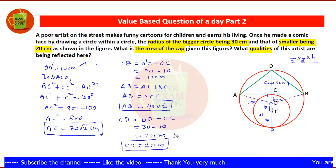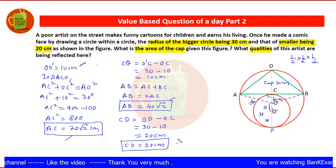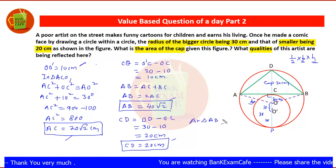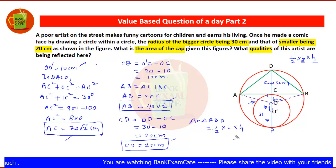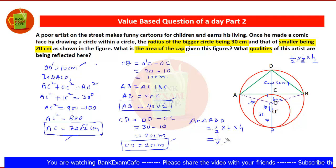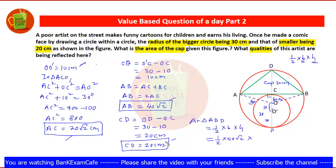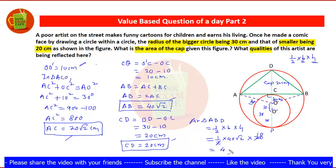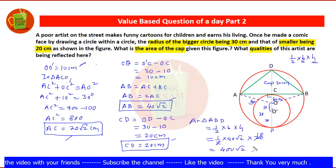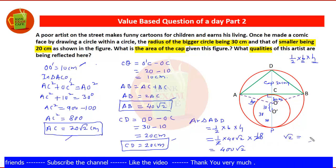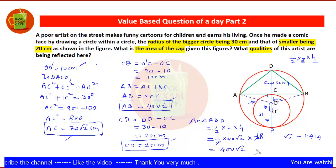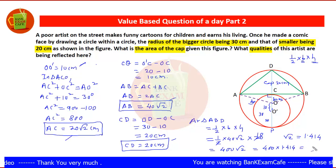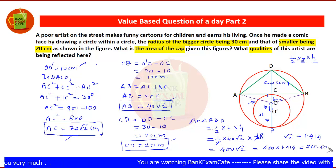Now we find the area of triangle ABD. Area equals one half into base into height, which is one half into 40√2 into 20. This gives 400√2. Since √2 equals 1.414, the area is 400 × 1.414, which equals 565.6 square centimeters.